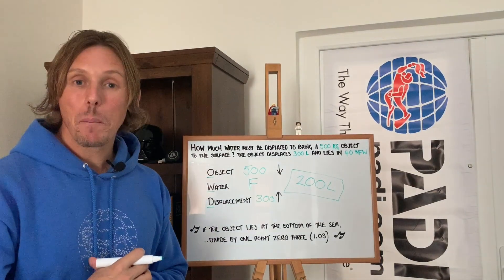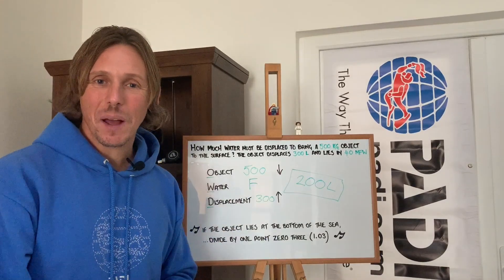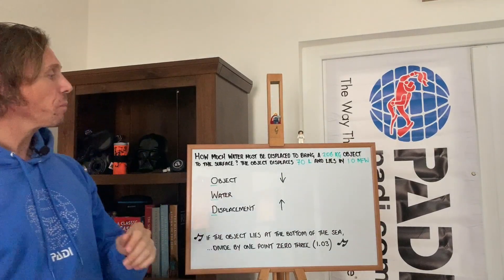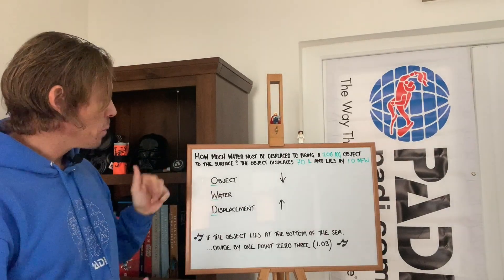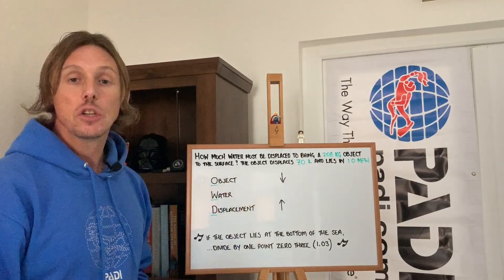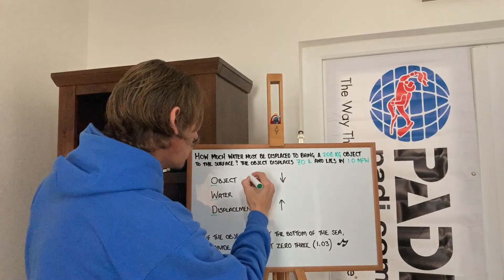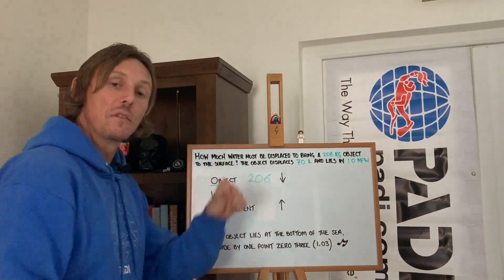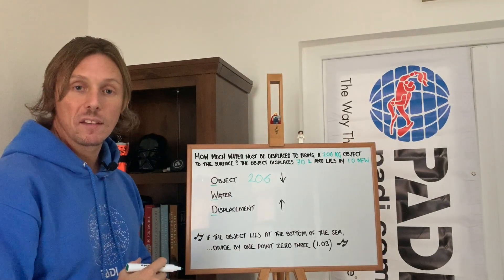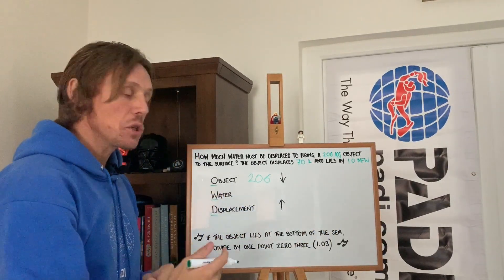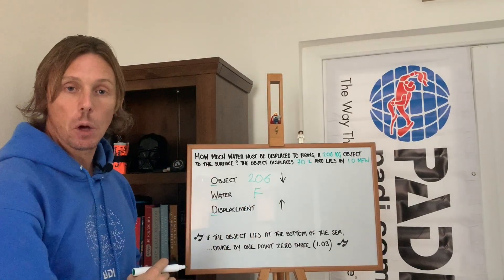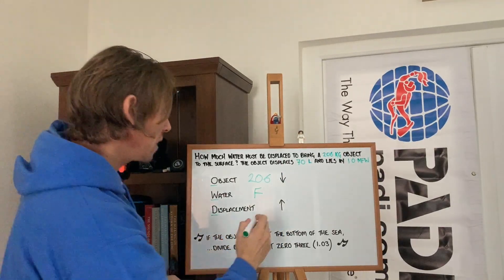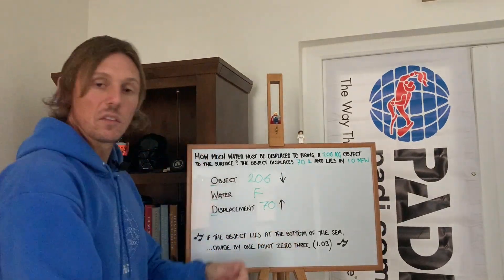It is by applying the riddle that we know whether to divide by 1.03 or not. I'll rewrite the board and we'll do the Alan Shearer example again in fresh water. Do we have the three things? Object weight — yes: 206 kilograms of downward force. Do we know the water it sits in? Yes — it is fresh water. And do we have the displacement? Yes — 70 litres of upward force. We find the difference.